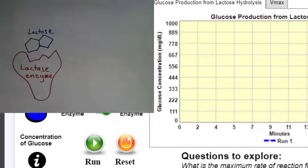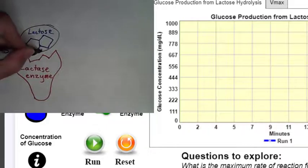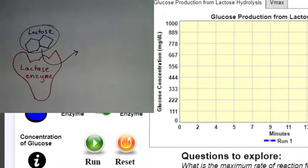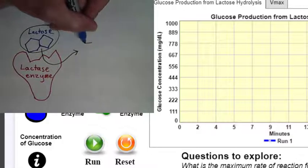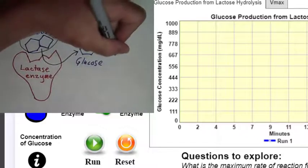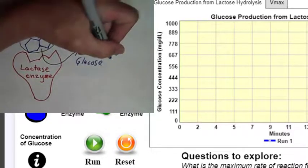What's going on in the simulation is you have lactose which interacts with the lactase enzyme. When it binds to the active site on the lactase enzyme, the lactose gets broken down into two molecules through the enzyme's catalytic activity: one being glucose and the other being galactose.